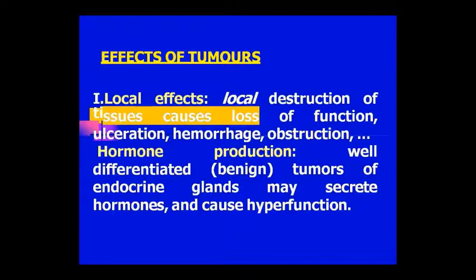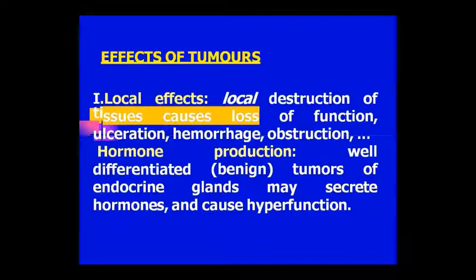We will see the effects of cancer. The tumor has both a local effect and a systemic effect. Locally, the tissue is destroyed due to the function of cancer — cancer causes hemorrhage and we get to see obstruction conditions. We also get to see hormone production. The well-differentiated tumor, which involves the endocrine gland, will secrete hormone.